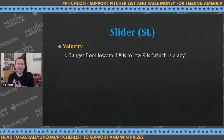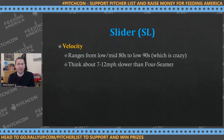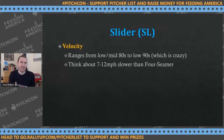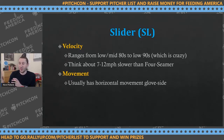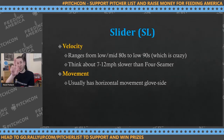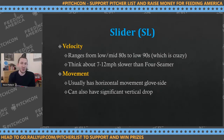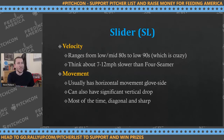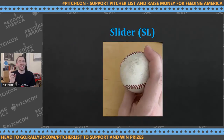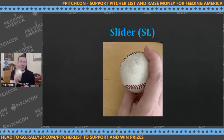Sliders are generally in the low to mid eighties, sometimes into the low nineties for elite relievers — typically seven to twelve miles per hour slower than the four-seamer. The movement can be really lateral at times, or very much about depth, depending on arm angle. If you stay fully on top of the grip, it will fall straight down. If you go to the side, you get more horizontal bend. Most of the time it's a blend — like Bieber and Kluber. The grip uses the side of the ball, and you want to stay as straight on it as you can.